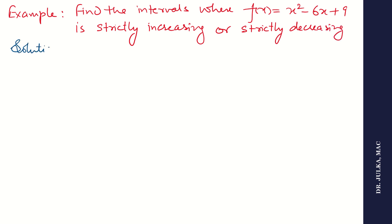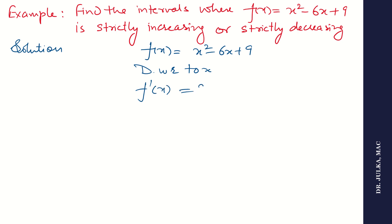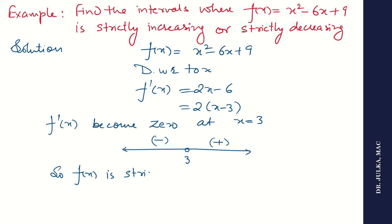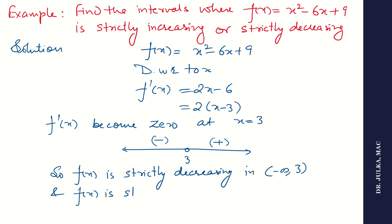Here f(x) is x squared minus 6x plus 9. Differentiating with respect to x, the first derivative is 2x minus 6, and taking 2 as common, the answer is x minus 3. The first derivative becomes 0 at x equals 3. So we will not take x equal to 3 as an answer. If we put any value less than 3, the first derivative is negative. If we put any value more than 3, the first derivative is positive, so the function is strictly increasing in 3 to infinity.